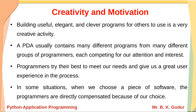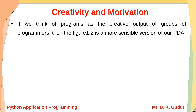In some situations, when we choose a piece of software, the programmers are directly compensated because of our choice. For example, on an Android device, when you download and install an application, it may show ads, and a third party pays the programmer for those ads. For some applications, you may need to purchase them. This is how programmers are directly compensated for their work.